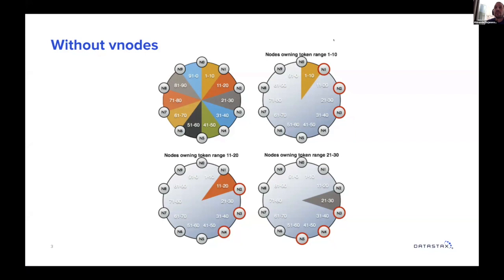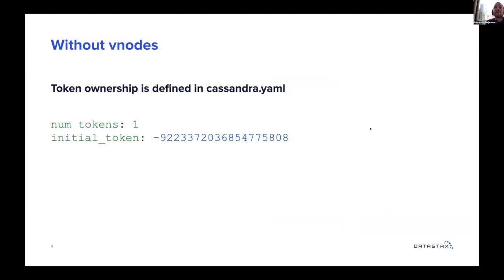A long time ago, and still now in some large installs, Cassandra was deployed without vNodes and the ownership of tokens in the ring was fairly simple. One node owns a single token range, and that token range is replicated on the RF-1 next nodes in the ring. Token ownership is defined in the Cassandra YAML, where you specify the number of tokens and the initial token when using a single token, i.e., without vNodes.